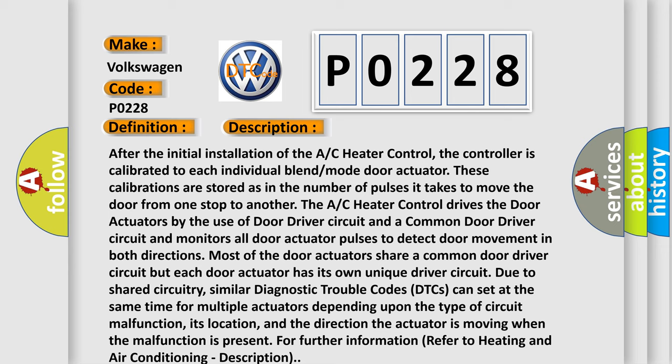Similar diagnostic trouble codes can set at the same time for multiple actuators depending upon the type of circuit malfunction, its location, and the direction the actuator is moving when the malfunction is present. For further information refer to heating and air conditioning description.